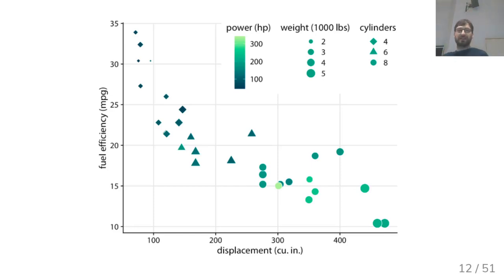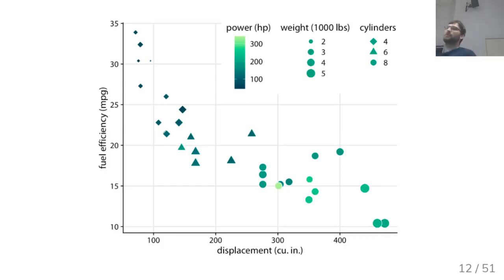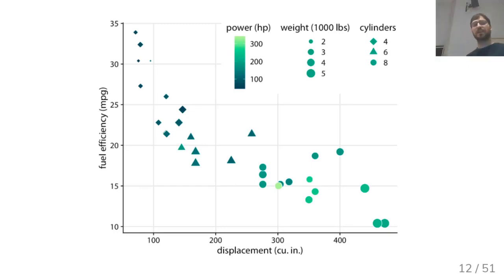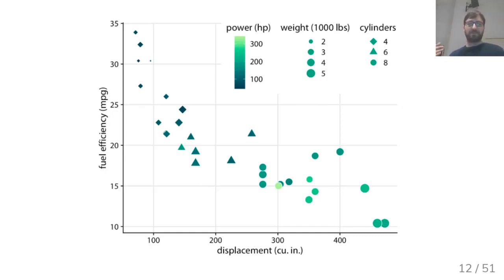In this graph, you could equally use displacement as the color and power as the x-axis, giving a completely different chart. It's important to think about what you really want to visualize and which mapping to the different aspects of the chart brings it out best.